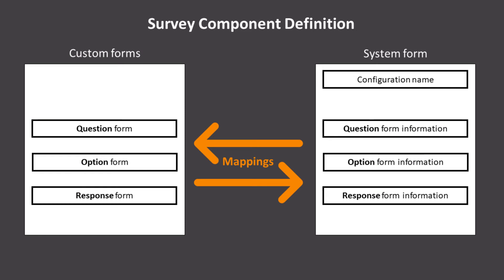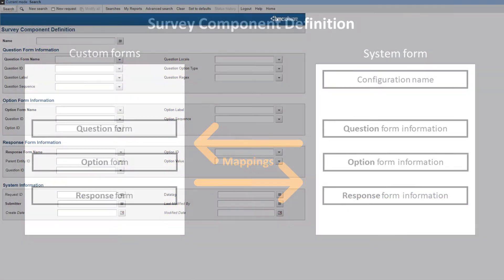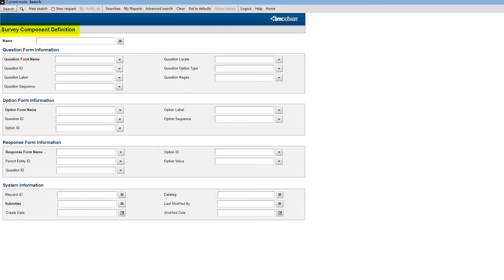As the first step, we'll use a system form called the Survey Component Definition Form. It displays the name of the survey configuration and the mappings for the question form, option form, and response form. These three are the custom forms. The Survey Component Definition Form stores the configuration for a survey. To add the configuration, we need the question form, option form, and response form. For this example, we've already created these three forms.